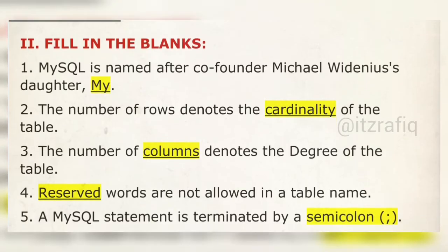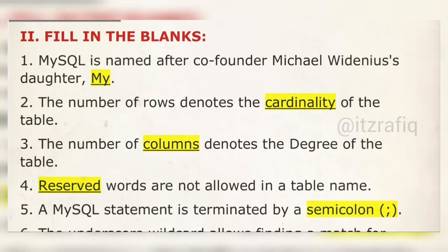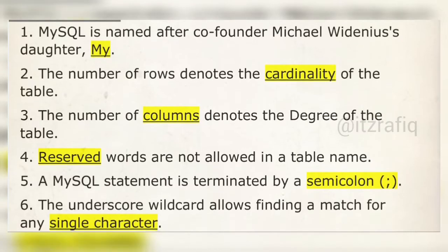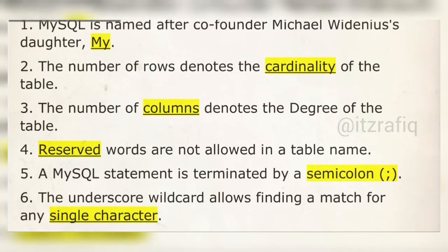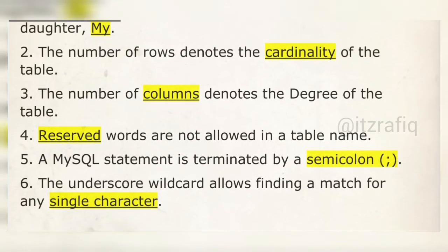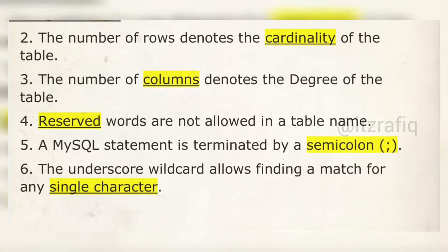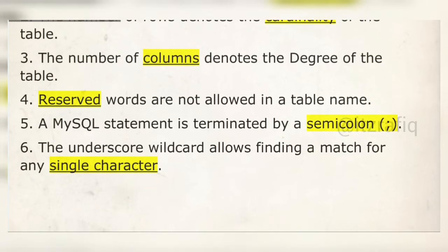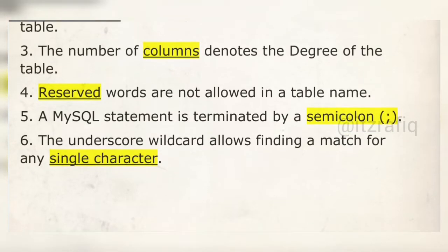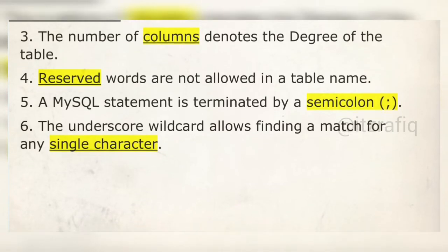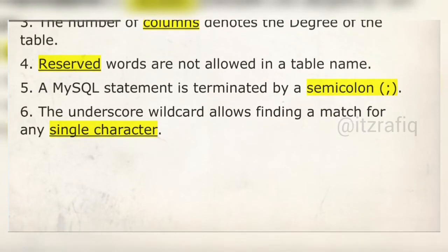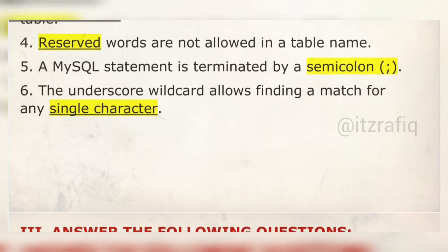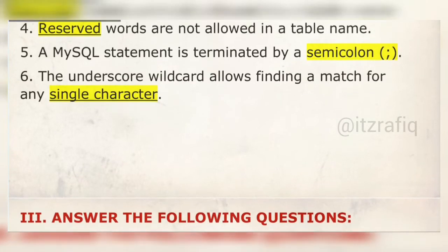So, the number of rows gives the cardinality, and the number of columns gives the degree of the table. Number four: reserved words are not allowed in a table name — words like INSERT, TABLE, DROP are already reserved. A MySQL statement is terminated by a semicolon.